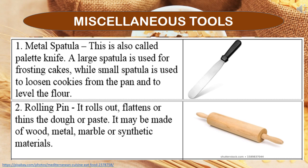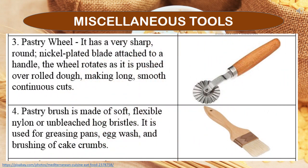The metal spatula, also called a palette knife, is used in two sizes: a large spatula for frosting cakes, and a small spatula for loosening cookies from the pan and leveling flour. The rolling pin rolls out and flattens dough or paste, and may be made of wood, metal, marble, or synthetic materials. The pastry wheel has a sharp, round, nickel-plated blade attached to a handle that rotates as it is pushed over rolled dough, making long, smooth, continuous cuts. The pastry brush is made of soft, flexible nylon or unbleached hog bristles, used for greasing pans, egg wash, and brushing cake crumbs.